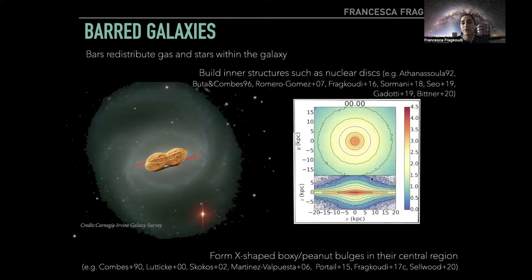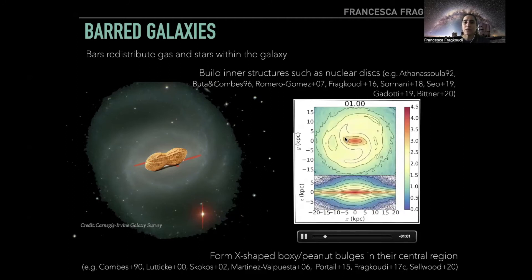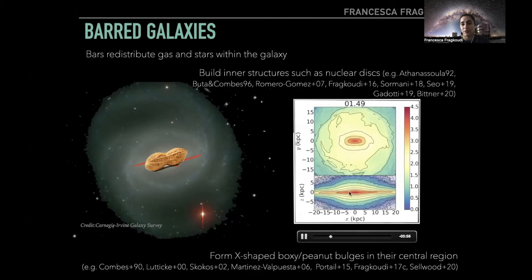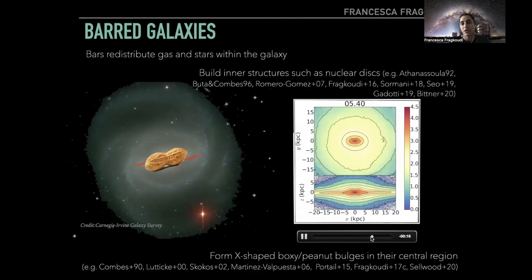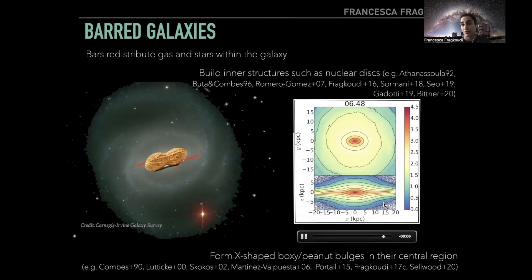Here I'm showing you a video of how such a boxy peanut bulge can form. This is a simulation of a disk galaxy where you can see the stellar distribution face-on and edge-on in the bottom panel. After some time of evolution, the bar forms itself. I'm rotating the bar to always be along the x-axis so you can focus on the bottom panel, where after some evolution you see that you form an X-shape or peanut-shaped bulge. This bulge forms through internal secular processes and disk instabilities, not through external processes.